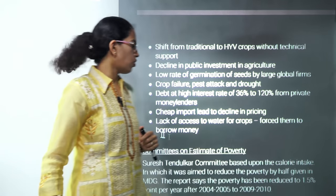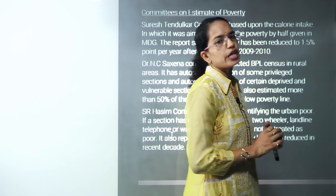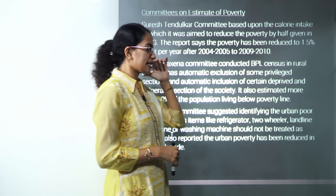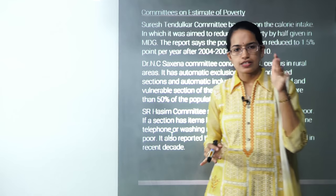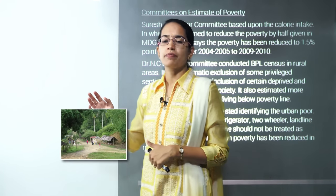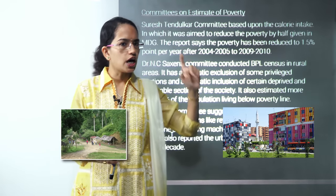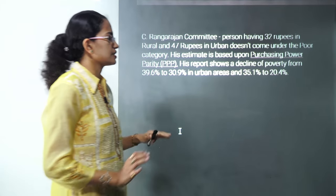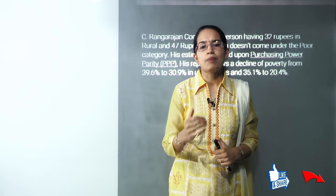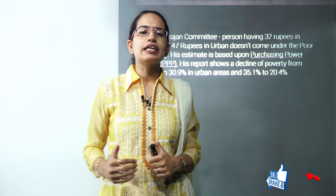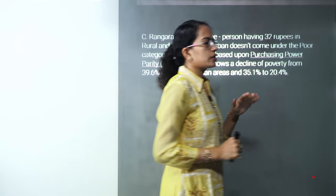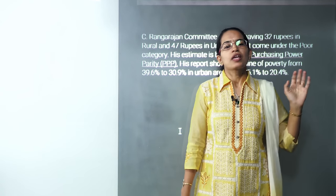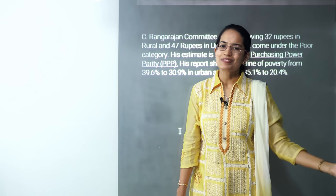Four key committees on poverty: the Suresh Tendulkar Committee, which estimated poverty based on calorie intake; the NC Saxena Committee, focused on rural poverty; the Hashim Committee, focused on urban poverty; and the Suresh Rangarajan Committee, which explained poverty through purchasing power parity. With this, the lecture concludes — further topics in economics, highly applicable to contemporary issues, will follow. Stay tuned and subscribe.